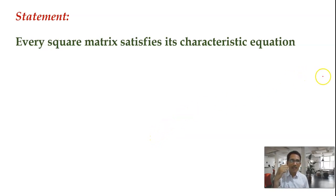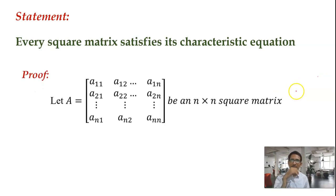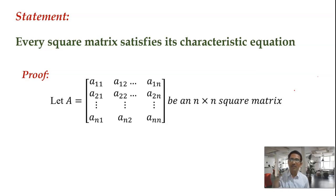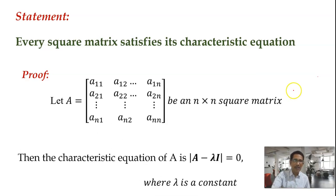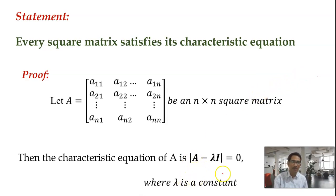Let us start our proof by considering a square matrix. Here I have written a general n by n square matrix. We need its characteristic equation, because we want to prove something about it. The characteristic equation of a square matrix is determinant of (A minus lambda I) equal to 0, where lambda is any real or complex number — that means lambda is a constant.